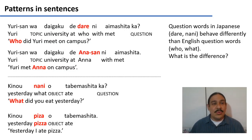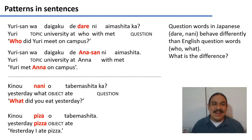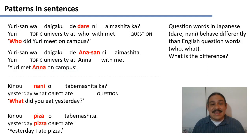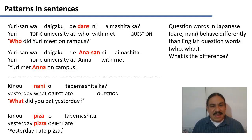The first sentence is a question: 'Yuri-wa daigakude dare ni aimashitaka?' — 'Who did Yuri meet on campus?' The second sentence is the answer: 'Yuri-san wa daigakude Anna-san ni aimashita' — 'Yuri met Anna on campus.'